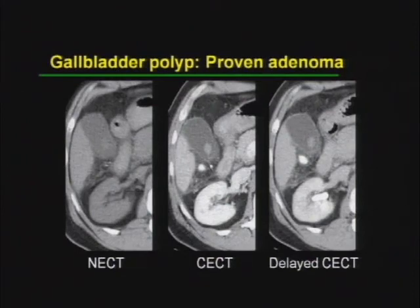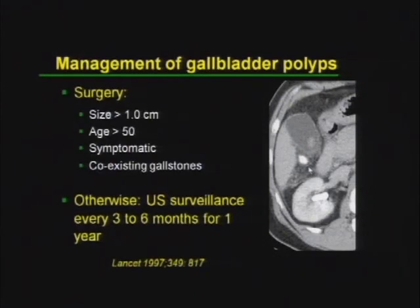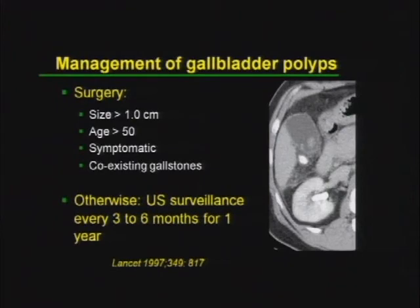Another very common finding is gallbladder polyps, which may be associated with cholesterolosis. This is a proven adenoma — it enhances from the non-contrast examination and may wash out a little. In general, if they're large, they may require cholecystectomy, but if asymptomatic in a young patient, we can follow with imaging. In older or symptomatic patients, we may remove the gallbladder to avoid any possibility of cancer. These rarely ever become cancer — only about 1–2%. They're not like colon polyps: gallbladder polyps, small bowel polyps, and gastric polyps tend to be benign.